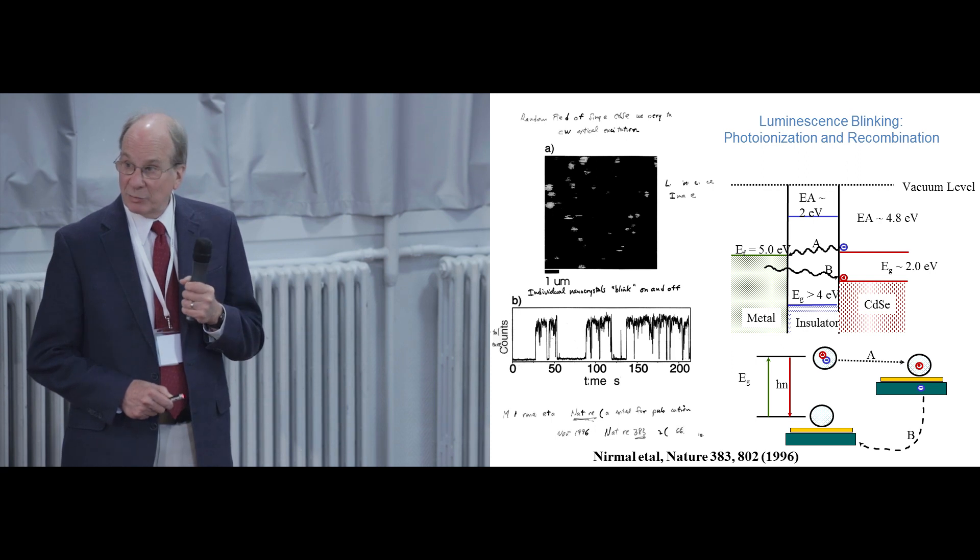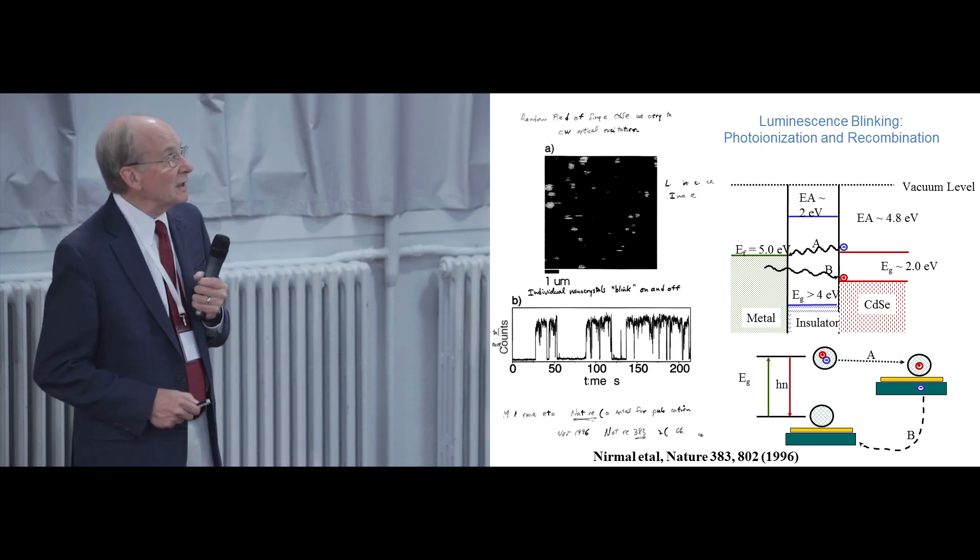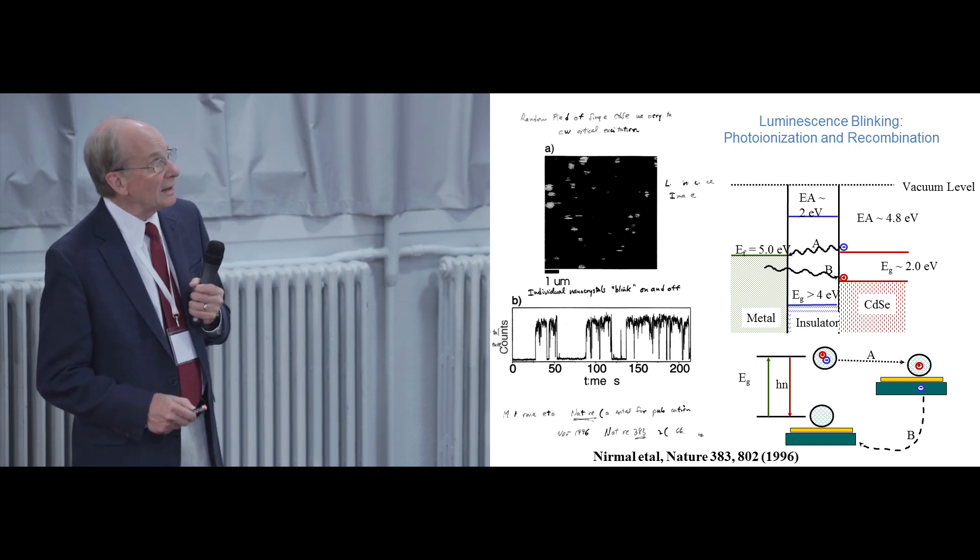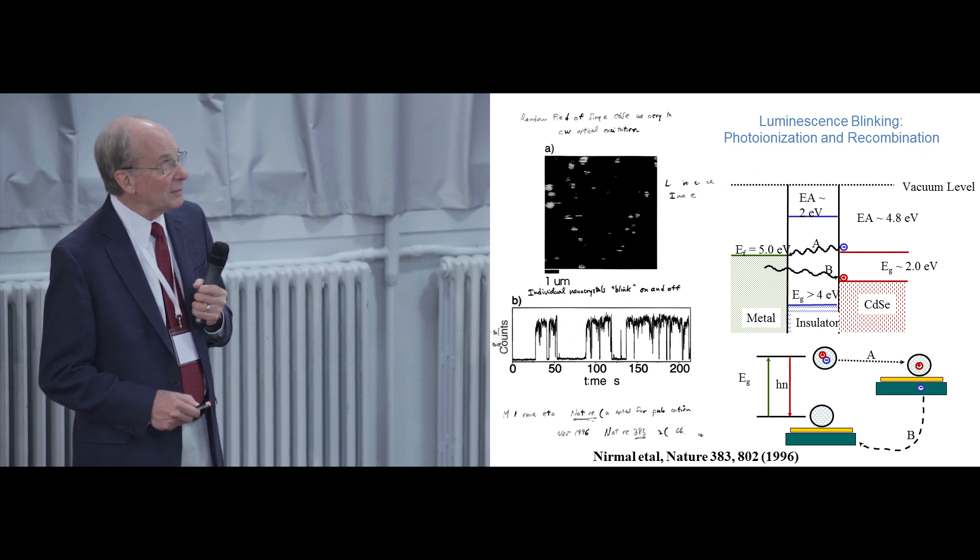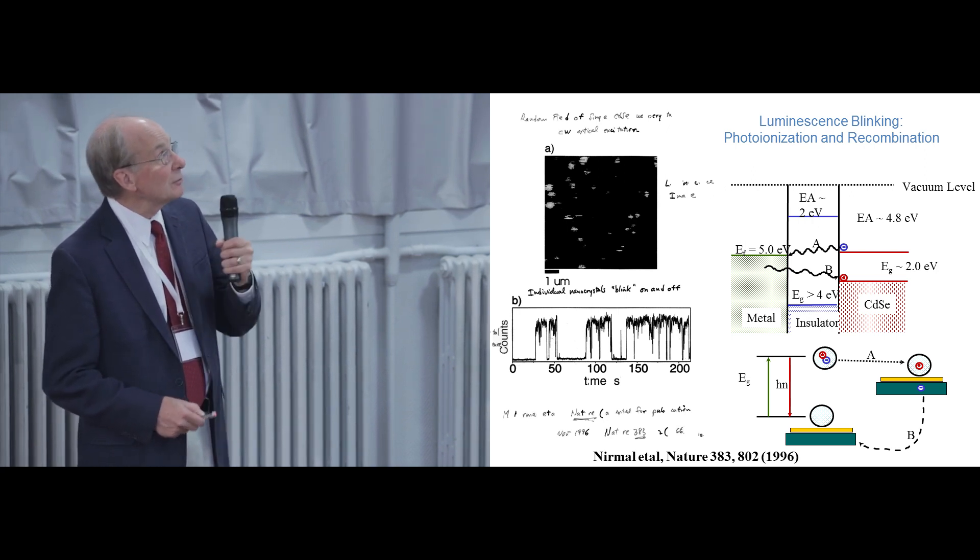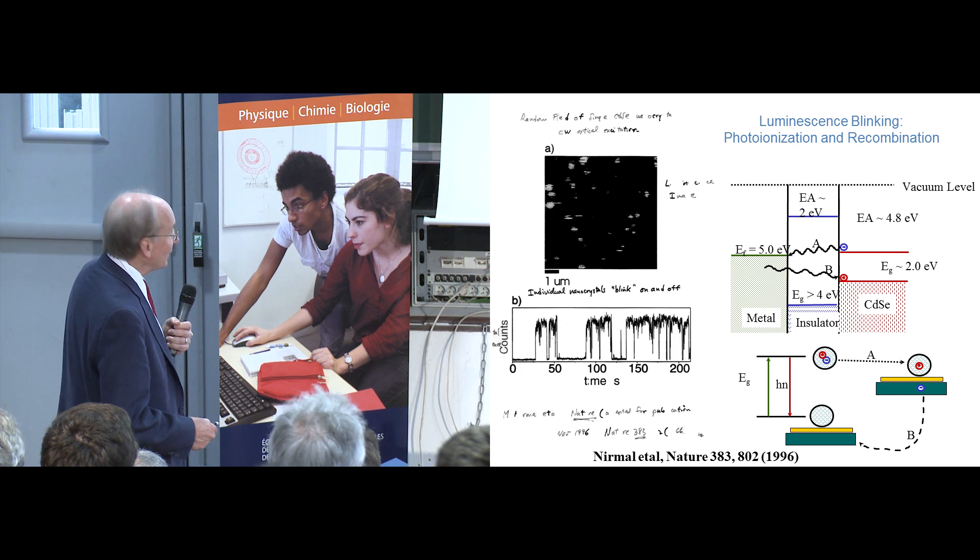As soon as we ran this experiment, we discovered the blinking immediately. These particles were blinking on and off under the light beam. And we built a model like this for the photoionization and the recombination and tried to understand everything that was going on. This is a problem. We'd like to get rid of it.